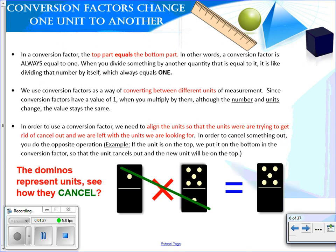In a conversion factor, the top part equals the bottom. It's the way that we convert between units. And what we will be doing when we set up these conversion factors is we will be multiplying them. And in order to use a conversion factor, we need to align the units so that the units we are trying to get rid of cancel out.